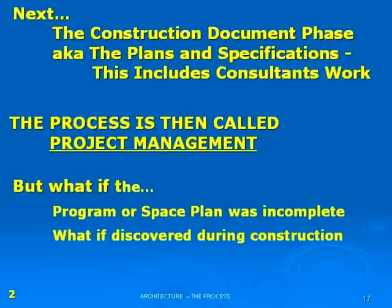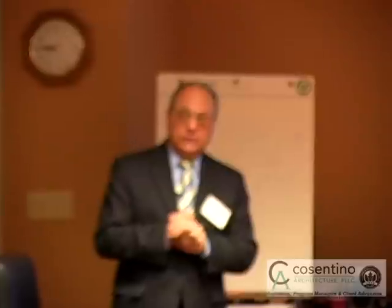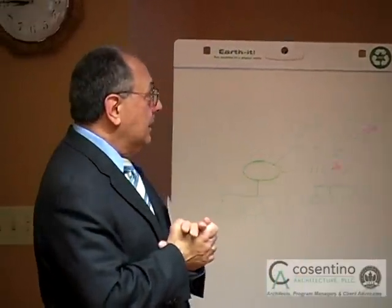But once it's out to bid and out to the contractors, it becomes very difficult and very expensive. Because now a contractor is looking at the set of plans you produced, and you're telling him, 'Wait a minute, Mr. Contractor, we want to make a change — we want to expand the building out another couple of feet this way.' These are, or can be, expensive changes. So if the space plan or program was inaccurate or incomplete, it needs to be corrected at this last stage: construction documents.